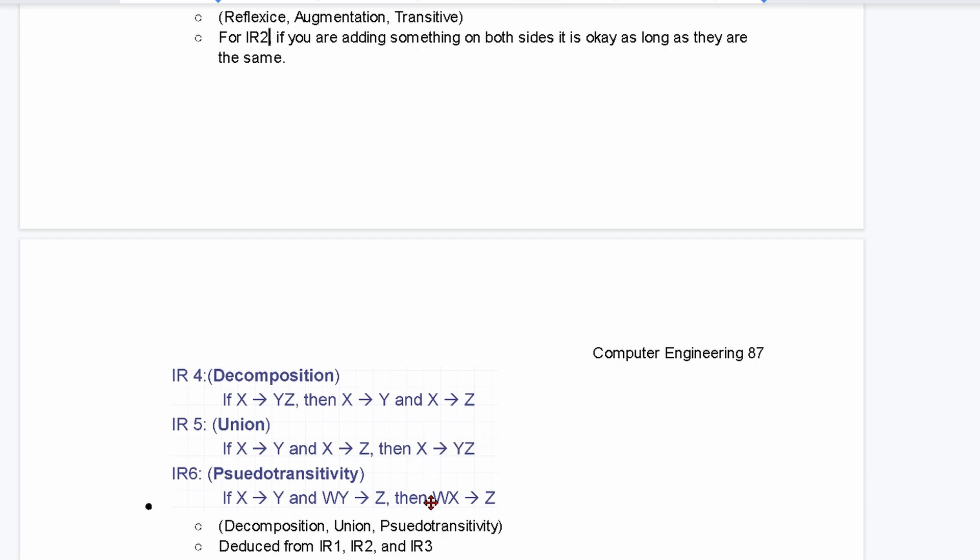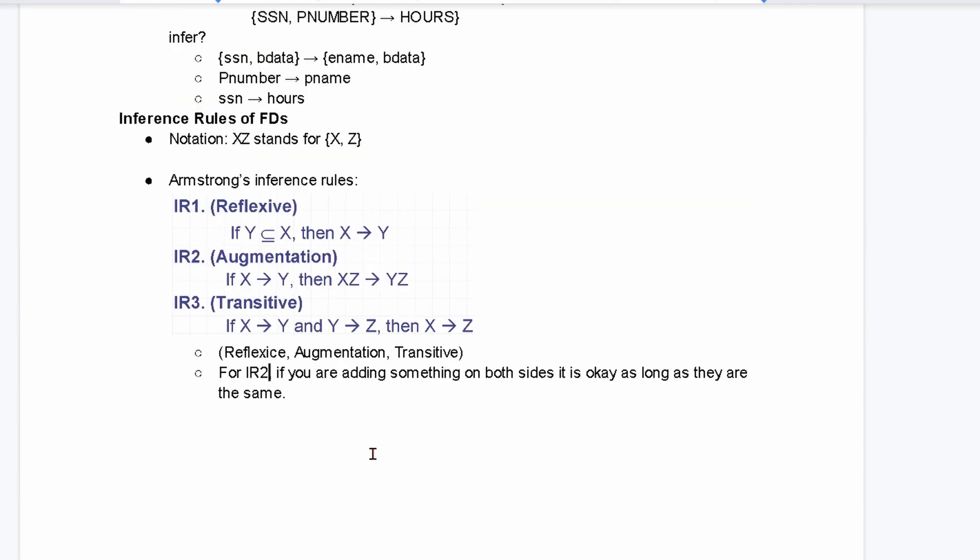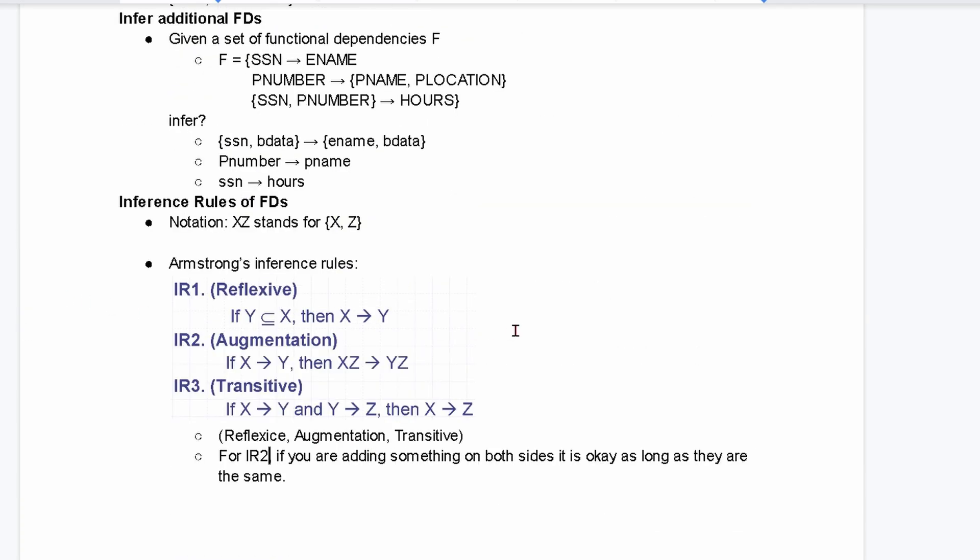We also have pseudo transitivity. So, if X is going to Y, and W, Y is going to Z, well, we can just replace this Y with an X. And then we're going to have W, X going to Z. These are deduced from our IR1, IR2, and IR3. So, we can just remember that, or we can always come back to this video.